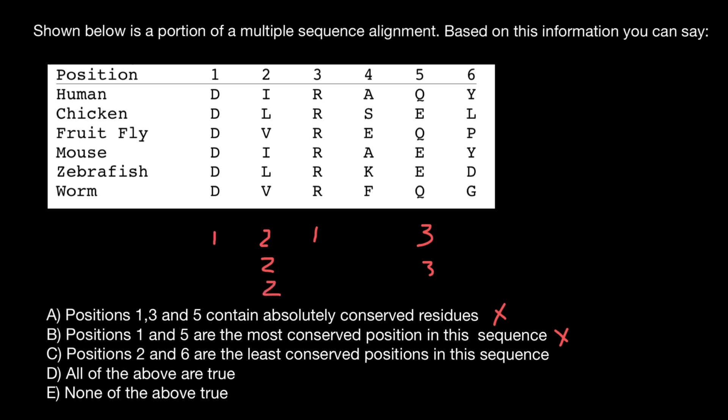Now let's check six. Here's position number six. Y stands for tyrosine and we see it in two species, so two. We see lysine in one species, so one. We see also proline in one species, so also one. And we see tyrosine, we already put it here. And then we see aspartic acid, so we put another one here. And glycine, so another one here.